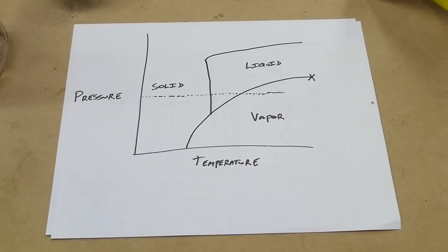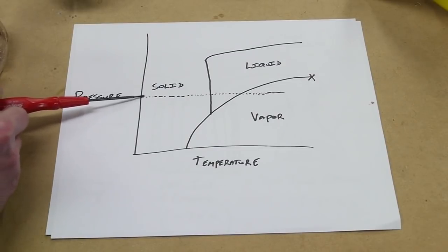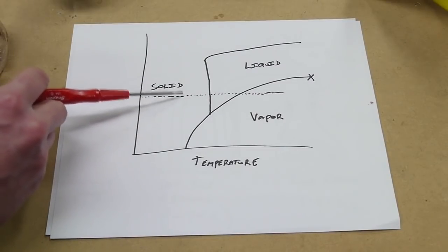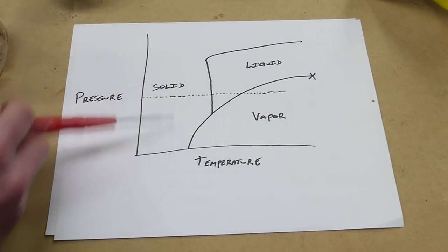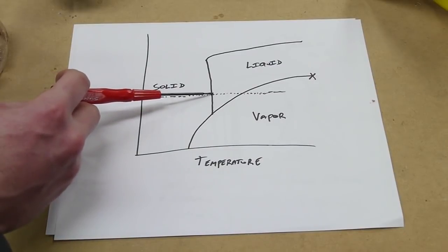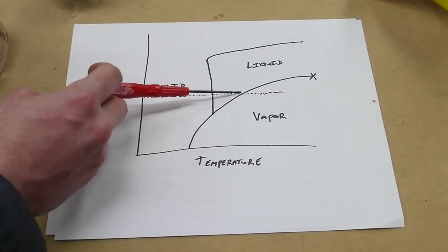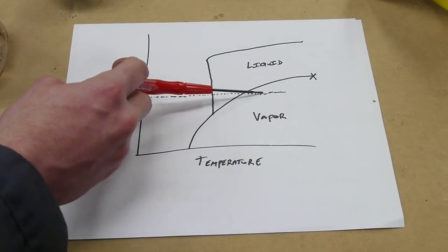Here's a phase diagram for water. Normally at atmospheric pressure, which is what I'm showing with this dotted line here, your ice cream starts off solid. It's cold and if you heat it up it eventually reaches this point here where it turns into a liquid and if you keep heating it like boiling it on the stove it eventually becomes a vapor and the water will be gone and you'll be left with a sludge, basically all the components of ice cream that aren't water.